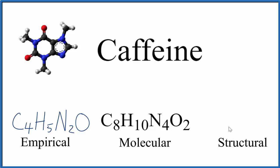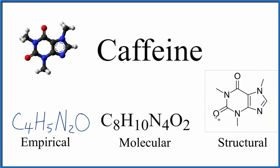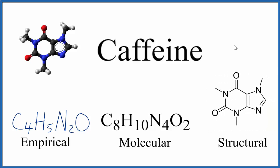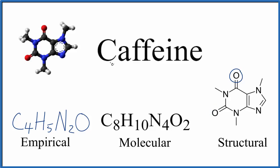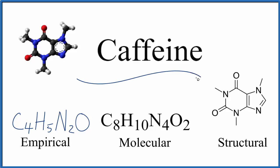If we wanted to write a structural formula for caffeine, it would look like this model here but in a kind of shorthand. So this is the structural formula for caffeine. Again, there are our two oxygens, right here. Likewise, we can look at the nitrogens, carbons, and hydrogens. Here we don't show the hydrogens explicitly — we'd have a carbon on the end of each line with three hydrogens, although we don't necessarily show them in the structural formula. So that's the empirical, molecular, and structural formula for caffeine.